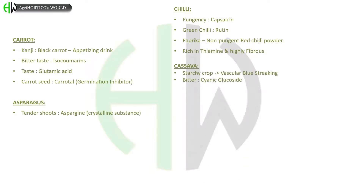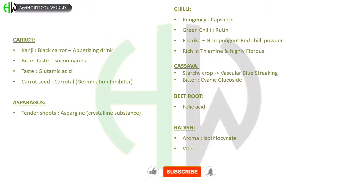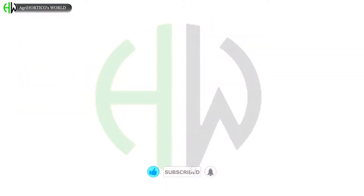In cassava, it is a starchy crop and very important to remember that it has vascular blue streaking. Bitterness is due to cyanogenic glucoside. In beetroot, folic acid is present. In radish, aroma is due to isothiocyanate and it has a good amount of wheat seed. In okra, galacturonic and glucuronic polysaccharides are present.